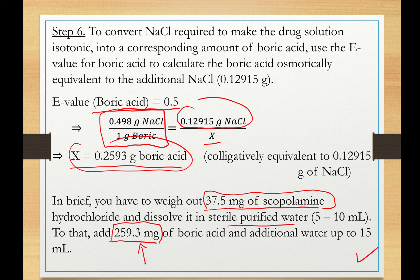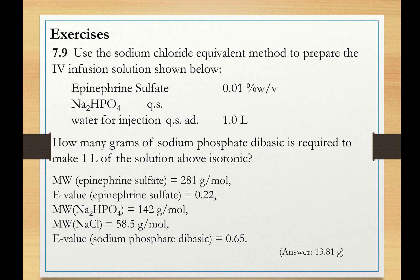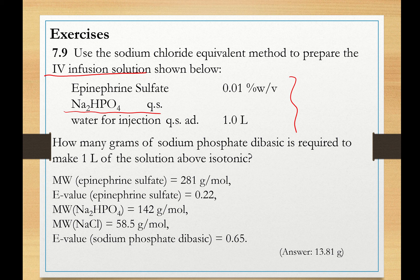We are not adding sodium chloride here. We used the E-value to determine how much boric acid is osmotically equivalent to the theoretical amount of sodium chloride needed to make this solution isotonic. I've included one exercise for you to practice: you need to make an IV solution isotonic using sodium biphosphate, not sodium chloride. You will need to calculate the E-values for both epinephrine and the sodium biphosphate salt. The answer is provided to verify your solution. Thank you for your attention, and see you next time.